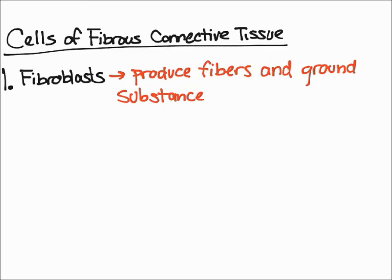The first type we're going to talk about are fibroblasts. In anatomy and physiology, when you have something ending in 'blast,' it usually refers to the making of something. Fibroblasts produce fibers and ground substance. The fibers are either collagen, elastic, or reticular fibers, which we'll talk about in a future video. Ground substance is a gelatinous material made up of glycoproteins and other components, also covered in a future video.